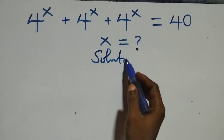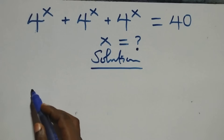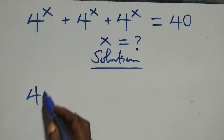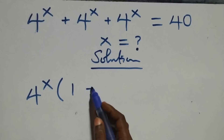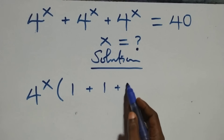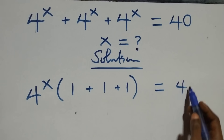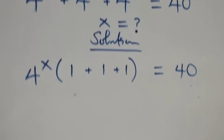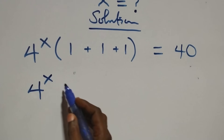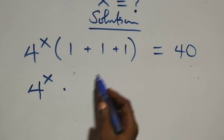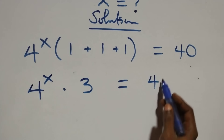From what we have here, we factor 4 raised to power x out. Here we have 4 raised to power x, into brackets, 1 plus 1 plus 1 left here, then equals to 40 on this side. The next step is the same thing as 4 raised to power x times 1 plus 1 plus 1, that's 3, equals to 40.